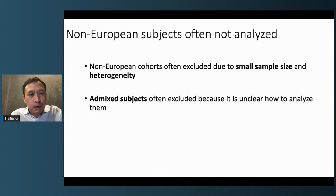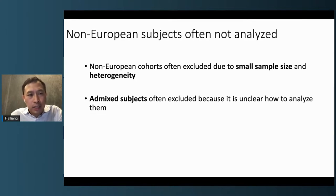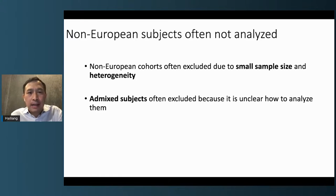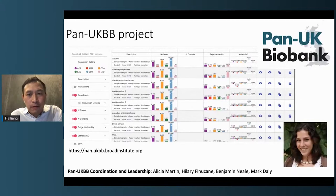For genetic discovery, we are starting to have non-European data being generated and available. But if you review the literature, you'll unfortunately still find that people often choose to remove these samples in analysis. The reasons are that they are quite small compared to European samples, they are heterogeneous, and it's very difficult to model them together with European data. I want to highlight the work by my colleague Alicia Martin. She led a flagship effort in analyzing all samples — not just European samples — in the UK Biobank, called the Pan-UKBB project. The methods and pipelines she created effectively established how we can analyze a biobank of diverse ancestries and will be extremely useful for the field.